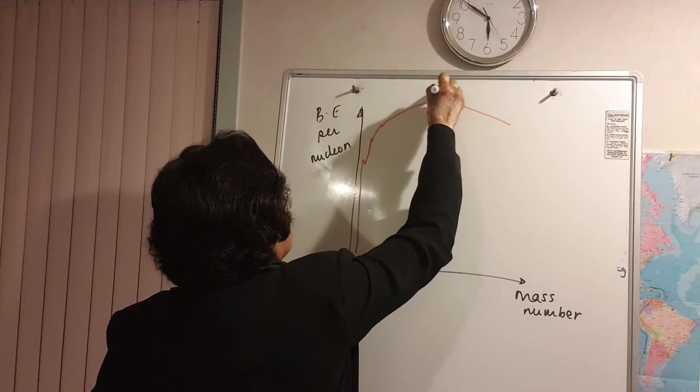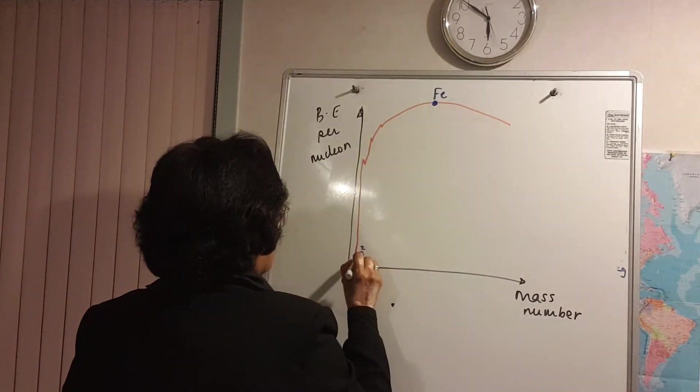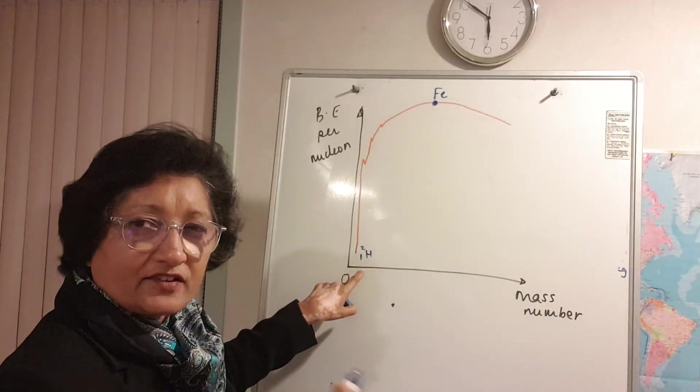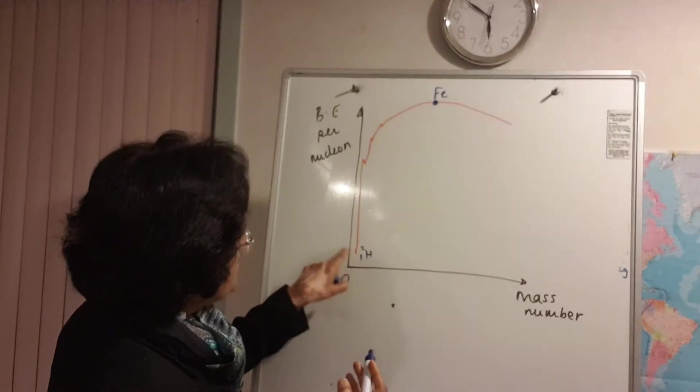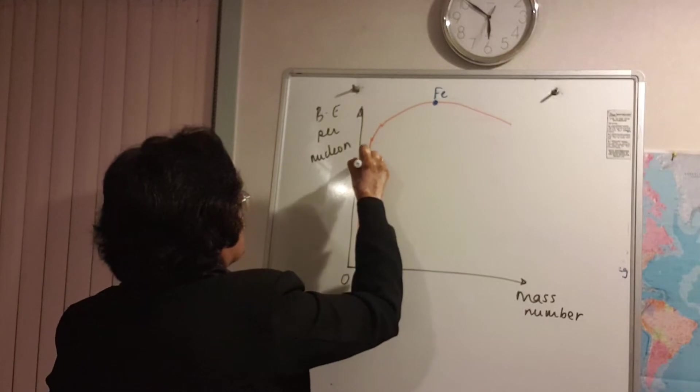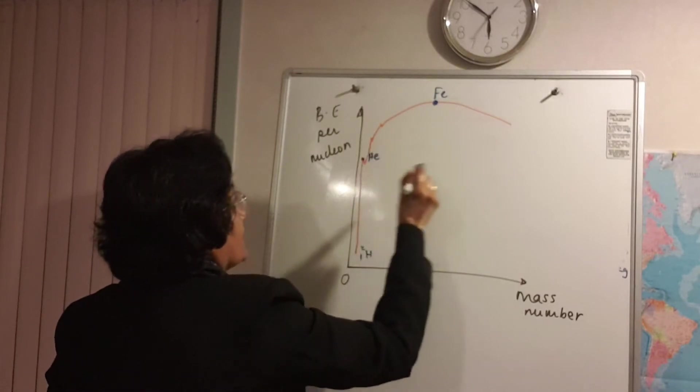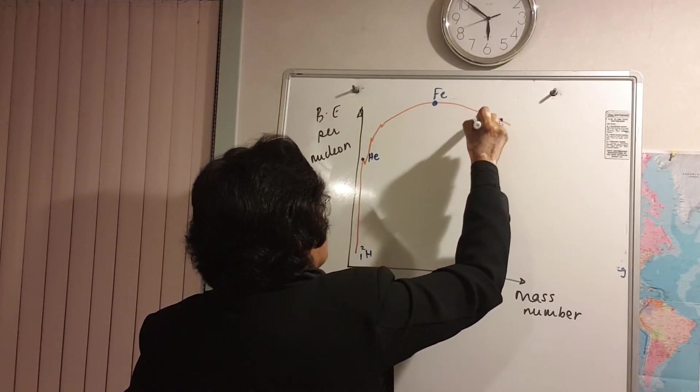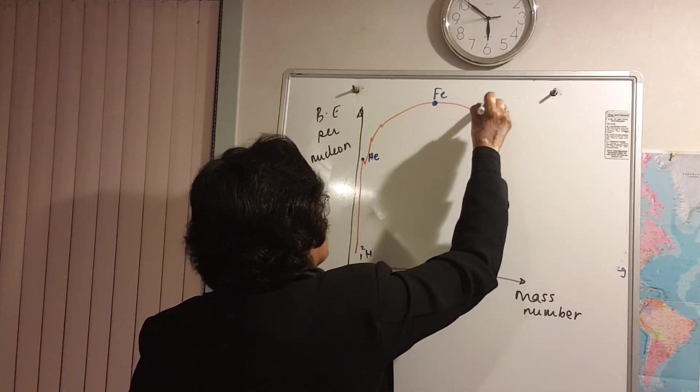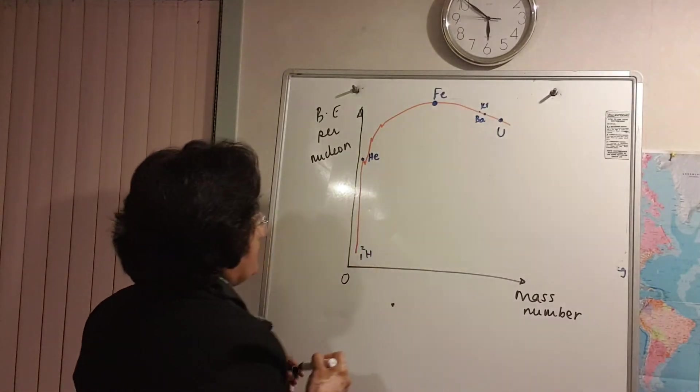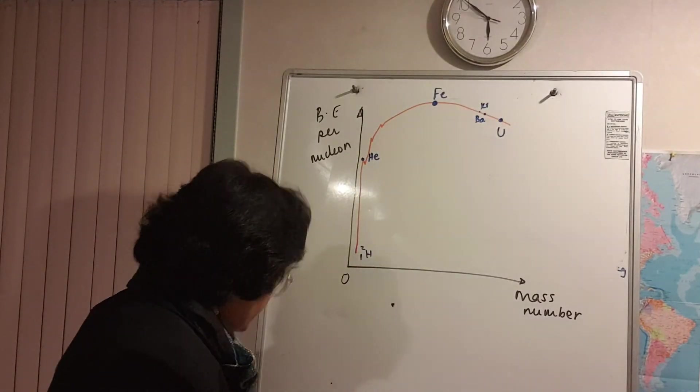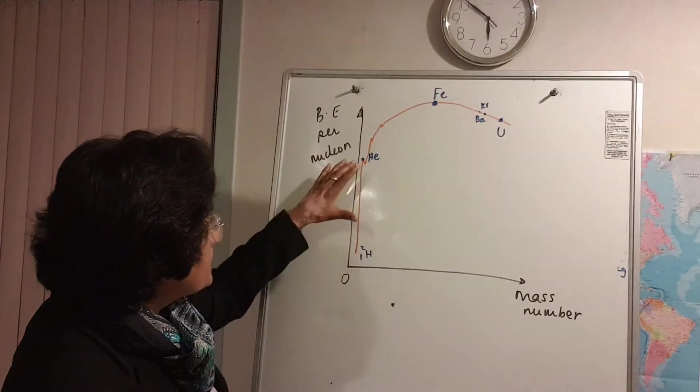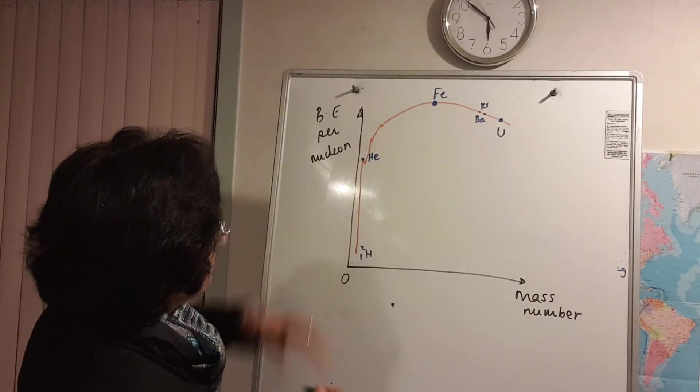At the top of the binding energy curve you've got iron. So let's say this is your isotope of hydrogen, deuterium, tritium, they're all over here. This one is helium. Let's say your uranium is somewhere here and your barium and krypton are somewhere over there.